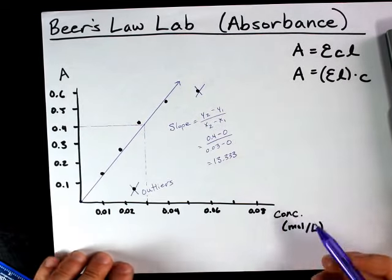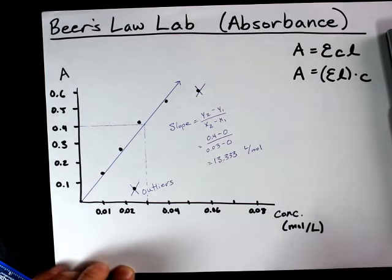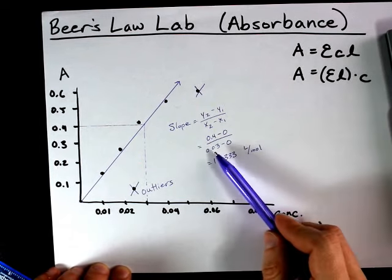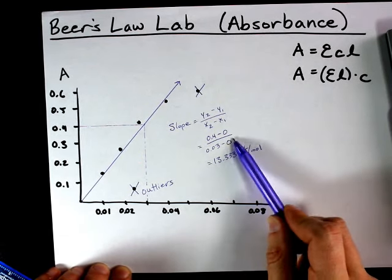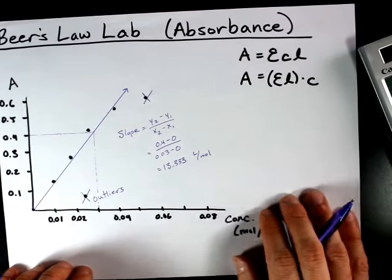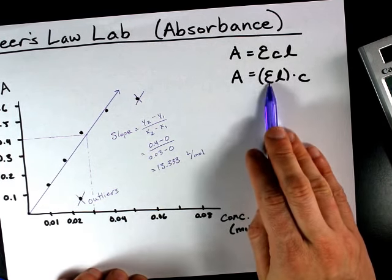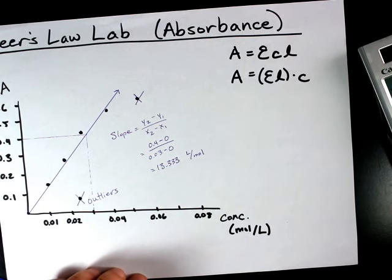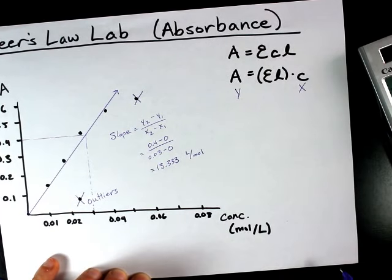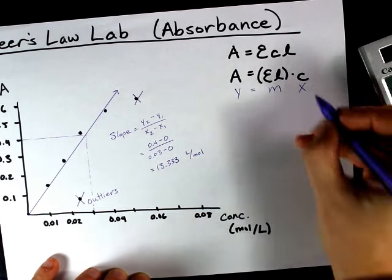The units on your slope are going to be liters per mole. The reason is absorbance, which is what was in the numerator of the fraction, is unitless. And moles per liter were the units of the denominator. Now, who cares? Well, you can calculate the molar absorptivity, that's a capital Epsilon in a Greek letter, as long as you've plotted absorbance on your y-axis and concentration on your x-axis, because y equals mx plus b.